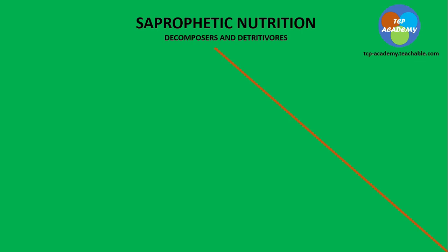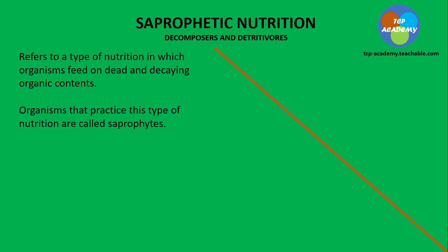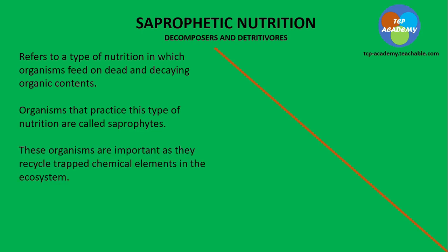Today we're going to be looking at decomposers and vegetivores, both of which fall under saprophytic nutrition. Saprophytic nutrition refers to a type of nutrition in which organisms feed on dead and decaying organic contents. Organisms that practice this type of nutrition are called saprophytes. These organisms are important as they recycle trapped chemical elements in the ecosystem. The group includes decomposers and vegetivores.